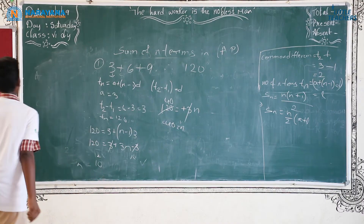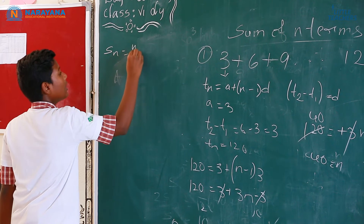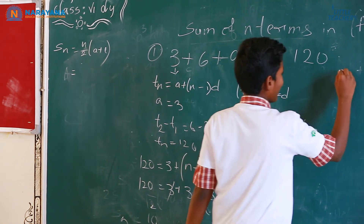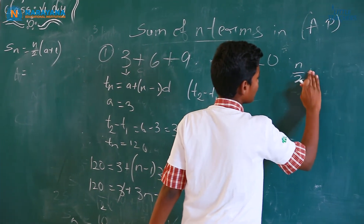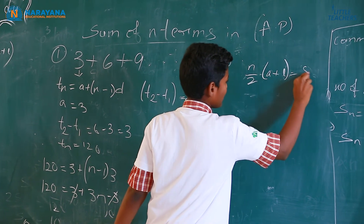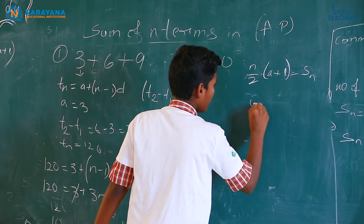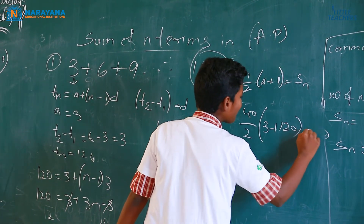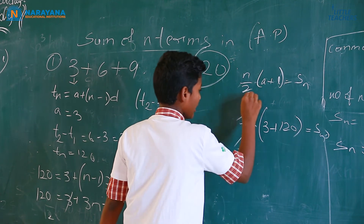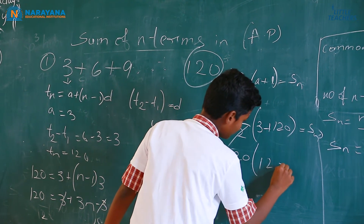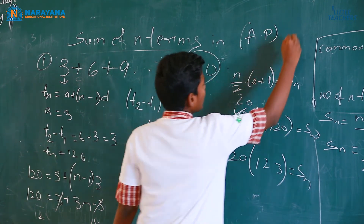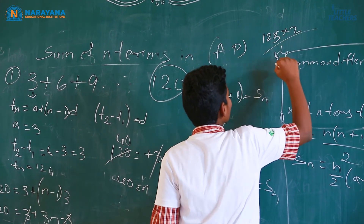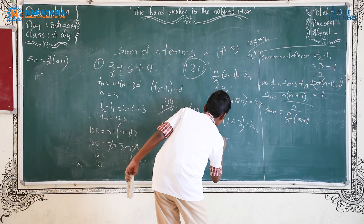Now we should find the sum of N terms. The formula is Sn equals n by 2 into (a plus L). Here n equals 40, so 40 by 2 equals 20. a equals 3 and the last term L equals 120. So Sn equals 20 into (3 plus 120) equals 20 into 123. Computing: 123 into 20 equals 2460. We got the answer: Sn equals 2460.